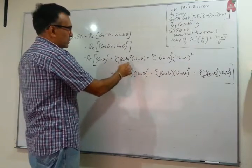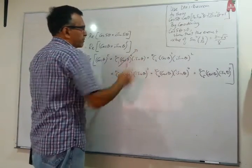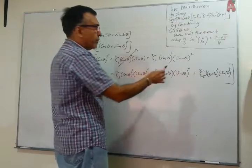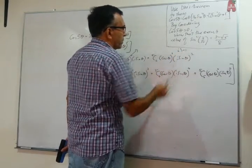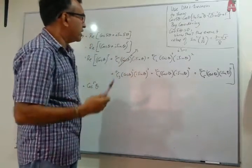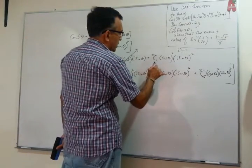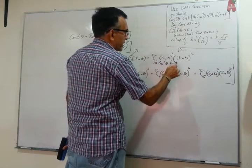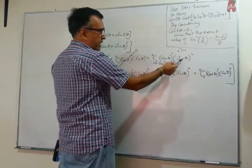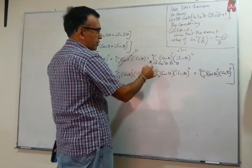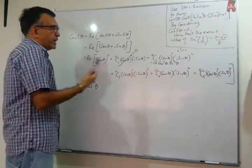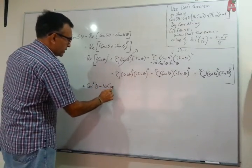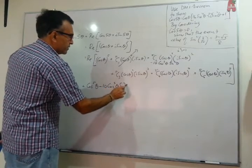The 5C1 term has i sinθ, so that is imaginary — we don't want it. The 5C2 term has i², and i² equals negative 1. 5C2 using a calculator is 10, so this gives us minus 10·cos³θ·sin²θ, which is real. The 5C3 term has i³, which is imaginary, so we skip it.